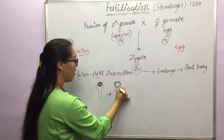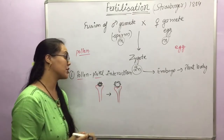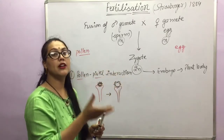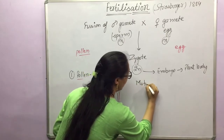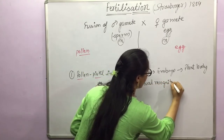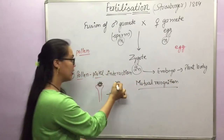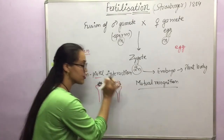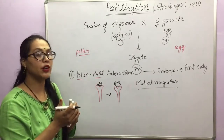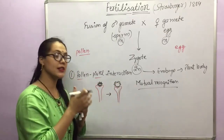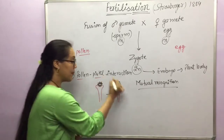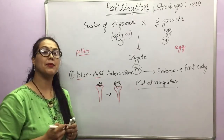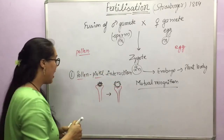The pollen grain swells and becomes ready to germinate, but before swelling, what happens here? There occurs mutual recognition — mutual recognition between the proteins in the wall of the pollen grain and certain factors on the surface of the stigma. If those chemicals are compatible, then recognition occurs, and only in that case will the pollen germinate.